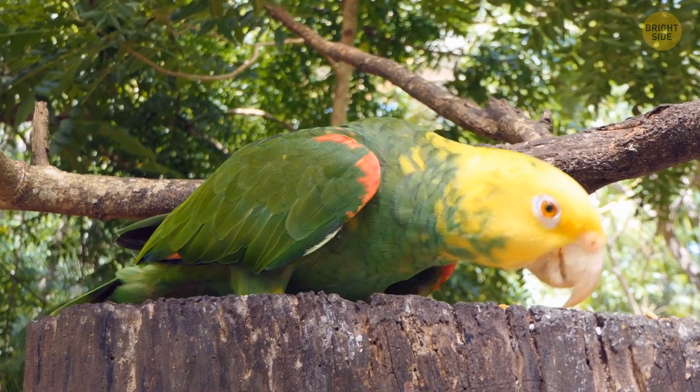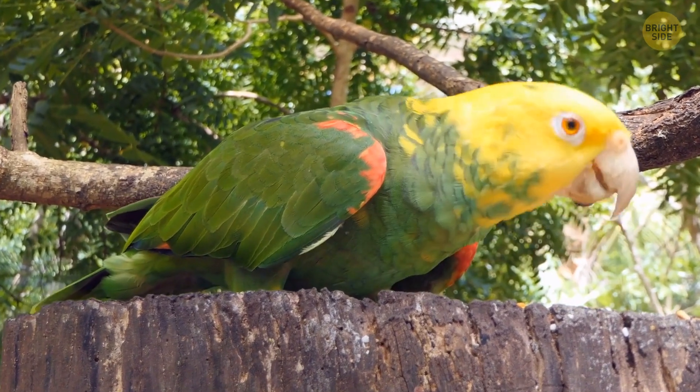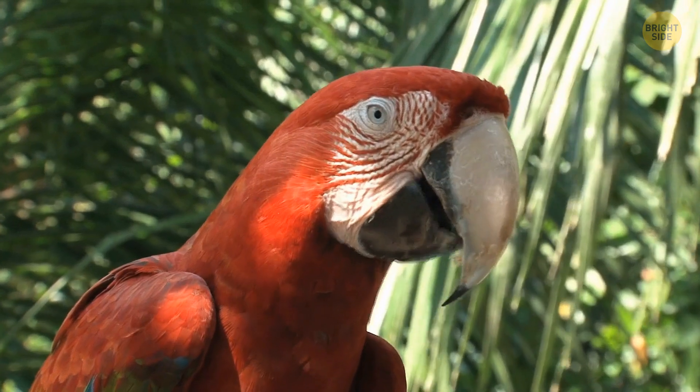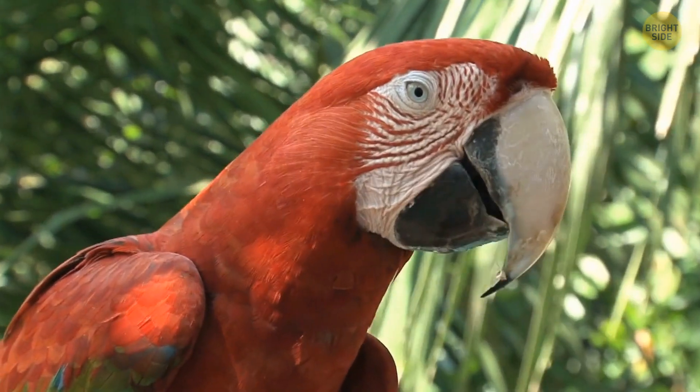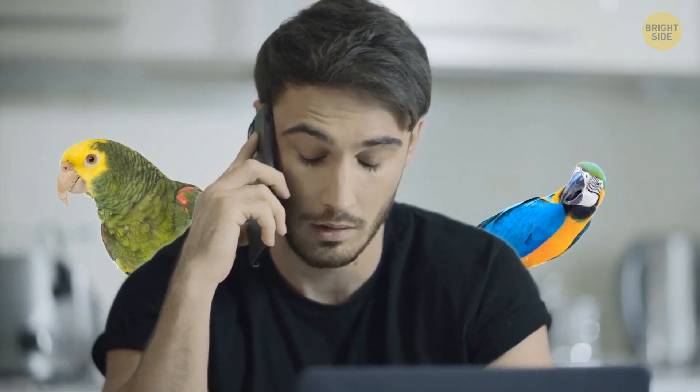This important organ is the same reason parrots can so easily imitate us, though most of them have no idea what they're saying. These birds have a thick tongue, and even though they've got fewer muscle moves, it helps them mimic human speech quite accurately. So, be careful what you say around them.